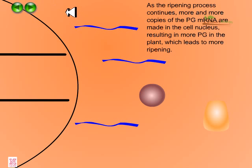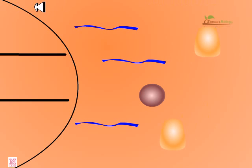As the ripening process continues, more and more copies of PG mRNAs are made in the cell nucleus, resulting in more PG protein in the plant, which leads to more ripening of the fruit.